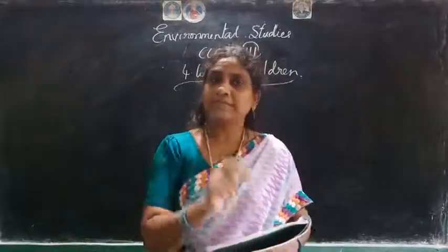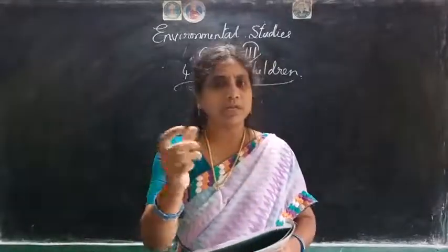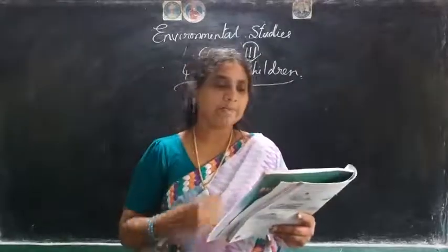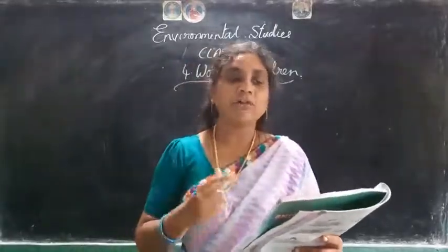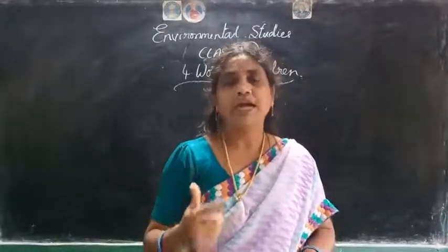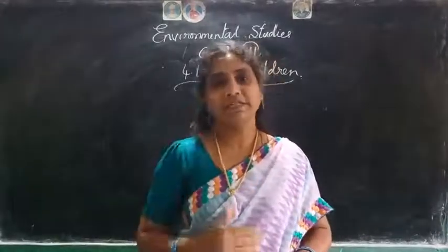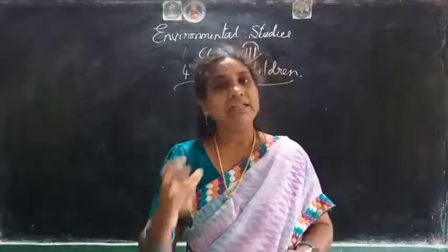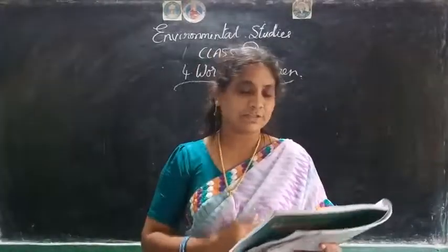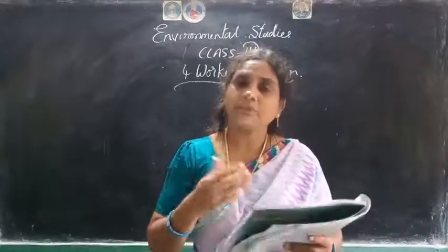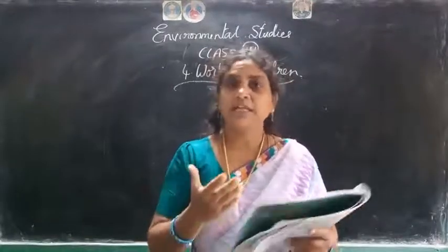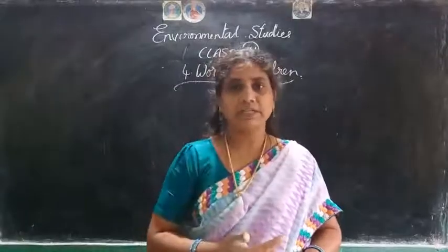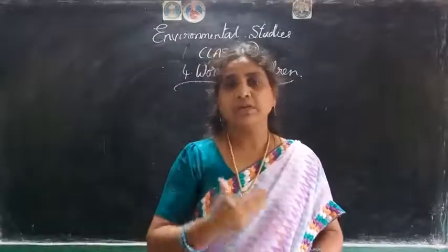Write their names, age, and where you have seen them. Next, find out the following about them: what work do they do, how much money do they earn, and do they go to school? Try to find this information about the working children you have observed.